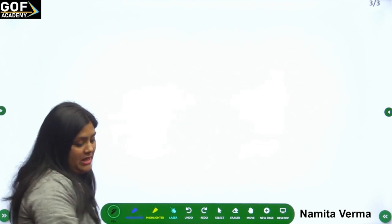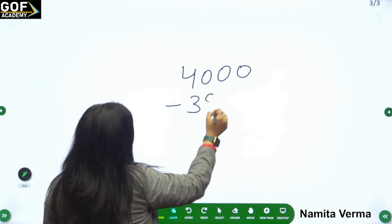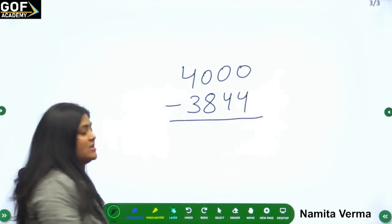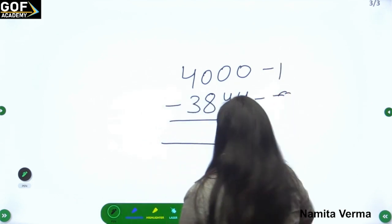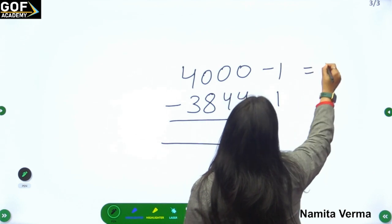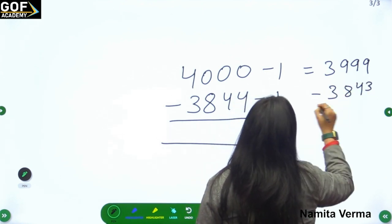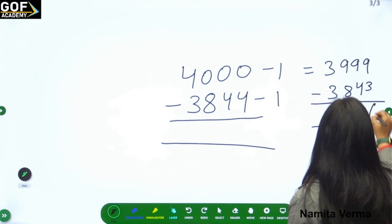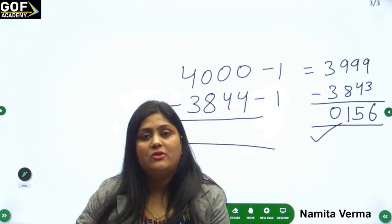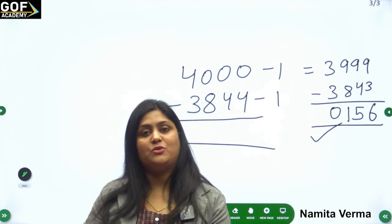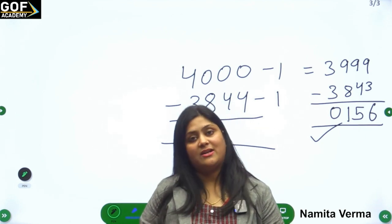You can try this with so many numbers. Suppose you have 4000 minus 3844. Using the same method: subtract one from both sides — 3999 minus 3843. Now: 9 minus 3 is 6, 9 minus 4 is 5 — you get the answer. This trick works with all thousands and hundreds numbers — all zero-ending numbers where you think regrouping will be hard.